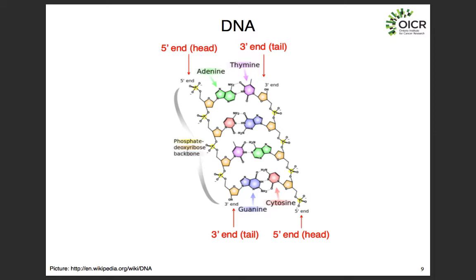What I really want to talk about now is how we sequence genomes, and how the sequencing technology has changed over the last 10 years to allow us to sequence human genomes at very large scales — where we can now sequence 10 to 20,000 human genomes in a single research institute per year.